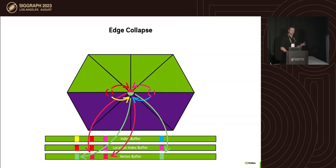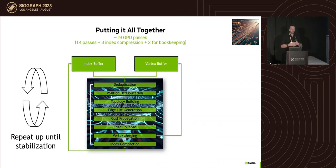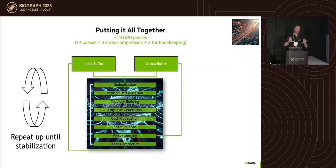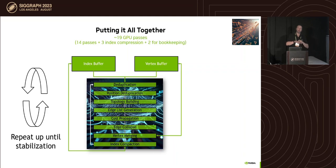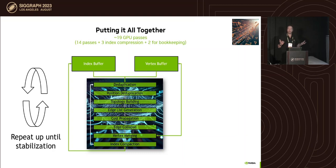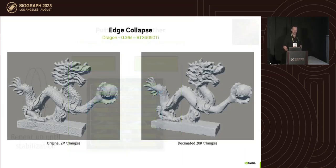The full pipeline is about 19 GPU passes — all on the GPU, nothing on the CPU. You repeat this operation again and again until convergence, when no more edges can be collapsed because the cost is too high. This is why it feels interactive: you can see the model converging at human scale.